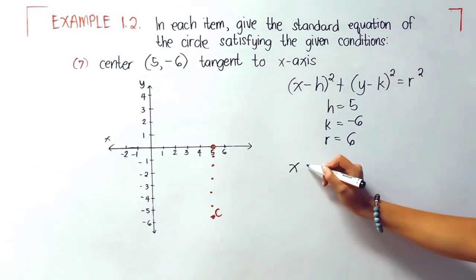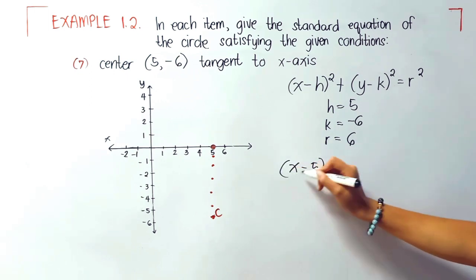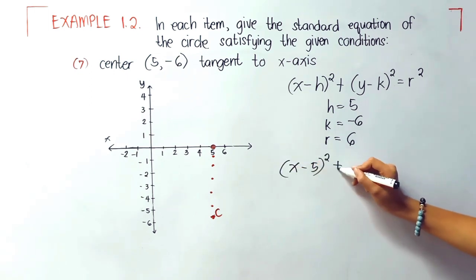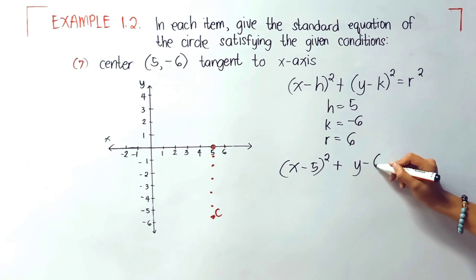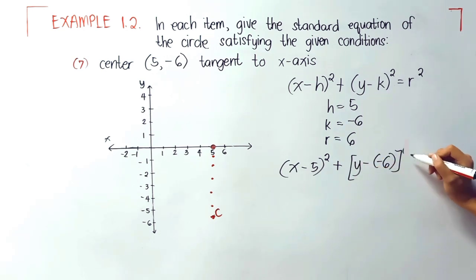We're now ready to substitute: x minus 5 quantity squared plus y minus negative 6 quantity squared equals 6 squared.